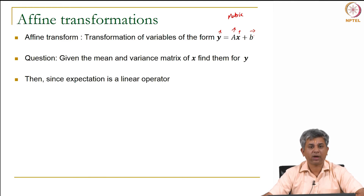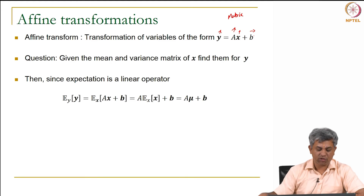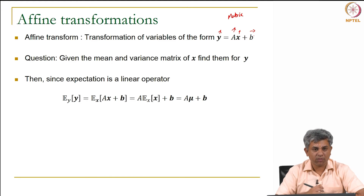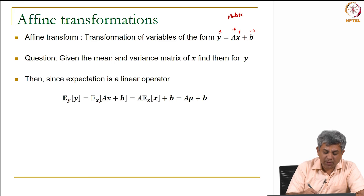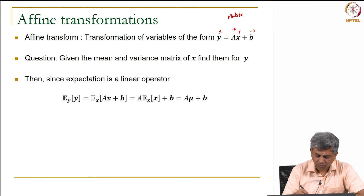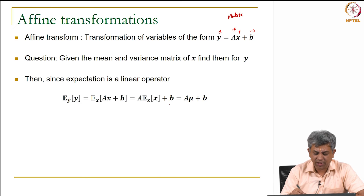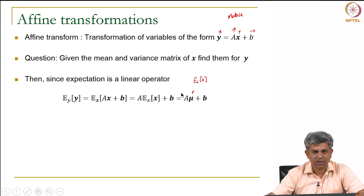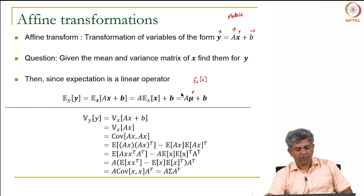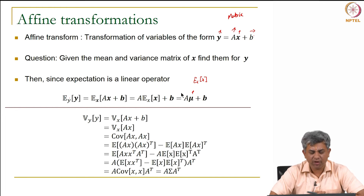It turns out there are mathematical relationships. Expectation works out as we expect: expectation of Y (over variable Y) equals expectation of AX plus B (over variable X), and since expectation is linear, we take the constant matrix A outside — giving A times expectation of X plus B, where mu is the notation for expectation of X. So this is quite simple as far as expectation is concerned. Variance is once again slightly more involved, so let us look at it step by step.